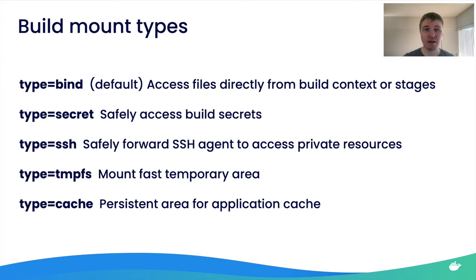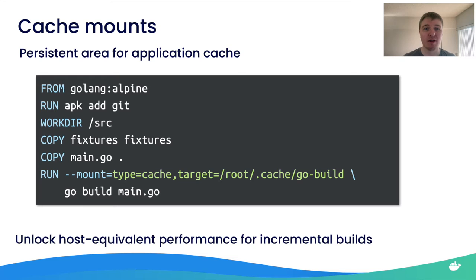There are secrets and SSH mounts: secret mounts let you access your build secrets safely, and SSH mounts let you forward your SSH agent to access private repositories or other resources. There are also mounts for creating temporary areas. Finally, there is the very interesting mount type: cache. With cache mounts, you can create areas where processed files persist for the next time you run the build — very important for incremental builds.